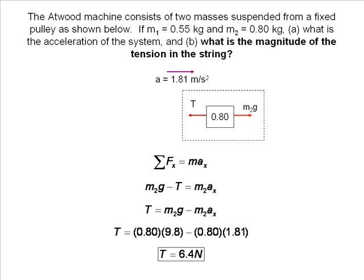You could also have isolated mass 1 and solve for T. If you would have done it this way, you would still get 6.4 newtons for the magnitude of the tension.